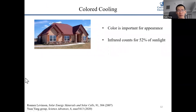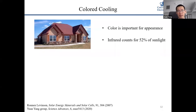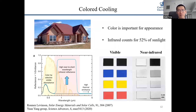Another challenge in the field is how to achieve cooling when the paint is colored, since we don't always want white paint — especially in residential buildings. White is sometimes not preferred. So the question is: can we achieve cooling when we have color? Color means some absorption of light, but sunlight has two parts: visible light and infrared light from 0.7 to 2.5 micrometers, which people cannot see.